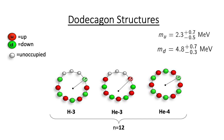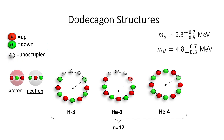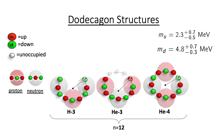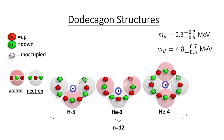Let's have a closer look at the dodecagon structures. Up and down quarks are red and green spheres, while unoccupied vertices are small white spheres. A proton is two up quarks with a down quark between, while a neutron is two down quarks with an up quark between. Thus each quark structure may also be viewed in terms of equivalent protons and neutrons. The current quark masses may be used to calculate centers of mass, as indicated by the dot at the base of each arrow. The arrows themselves point to the farthest quark in each structure, and the predicted radius is the distance from the center of mass to the farthest quark.